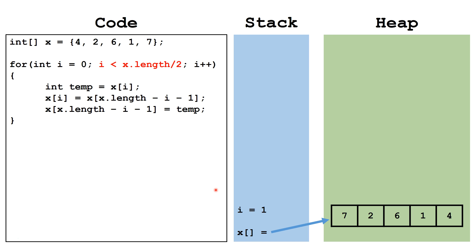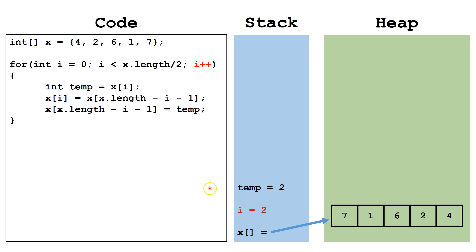We check: is i still less than x.length divided by 2? It is, so we continue. We create the temp variable and copy the value from x[i], which is in this case 1, into the temp variable. We copy the value from the index opposite x[i], in this case index 3, into x[i]. And finally, we copy the value from the temp variable into the index opposite x[i]. At the end of the loop, we again increment i to be 2. We check: is 2 still less than 2? This is no longer true, so we terminate the loop and continue on with any code afterwards.